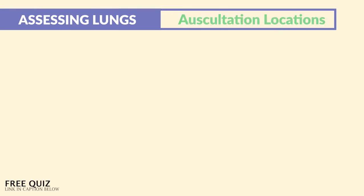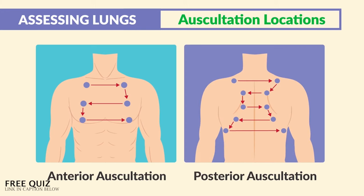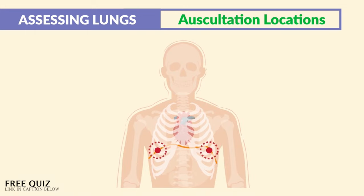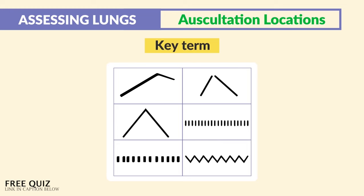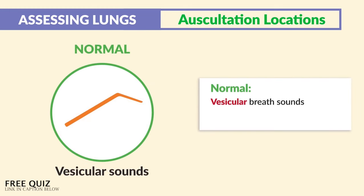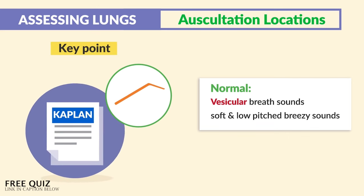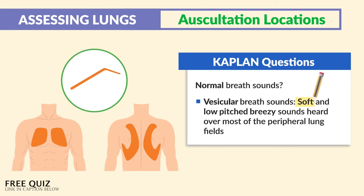For auscultation, we have anterior locations on the front of the chest and posterior on the back, where we mostly assess the lower lobes. Position the patient upright in high Fowler's position, point the diaphragm of the stethoscope downward, and place it in the intercostal spaces. Normal breath sounds are called vesicular breath sounds — soft and low-pitched breezy sounds heard over most of the peripheral lung fields. This is a key point for Kaplan standardized exams.